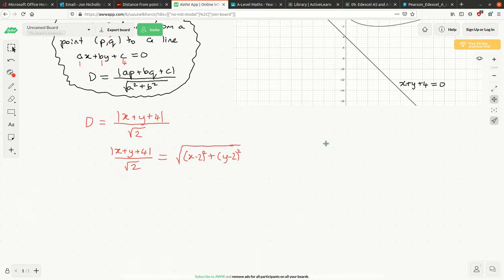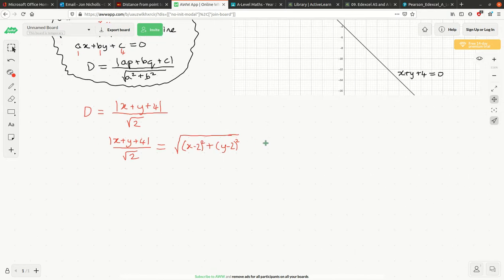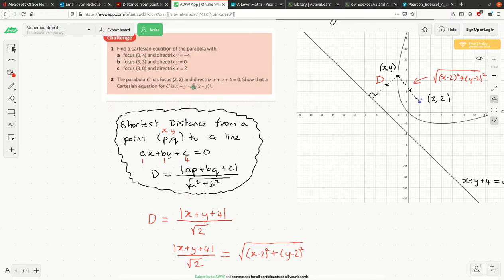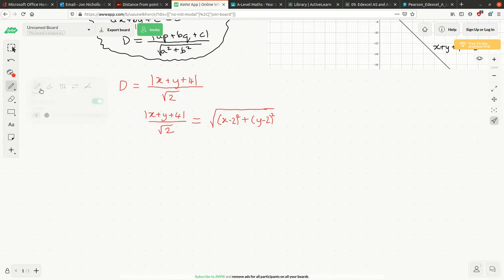So we're now in a position to work out the equation of the parabola. We've just got to tidy this up and turn it into their answer. And I believe their answer looks very nicely expressed. It's X minus Y squared over 16 is X plus Y. Let's see if we can get all the way there. Firstly, clearly I'm going to have to square both sides. That gets rid of the modulus, which is handy.